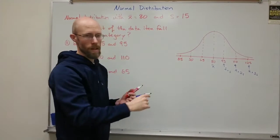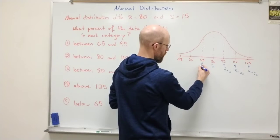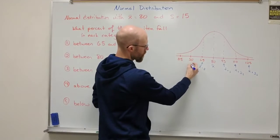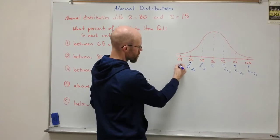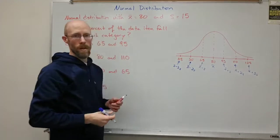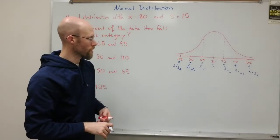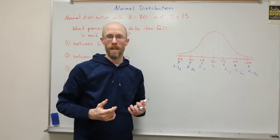And so I can fill in the notation here. This would be x bar minus one standard deviation. This is x bar minus two standard deviations. And here we have x bar minus three standard deviations. So you can see how this builds out from the mean on either side.